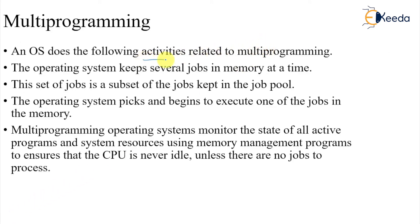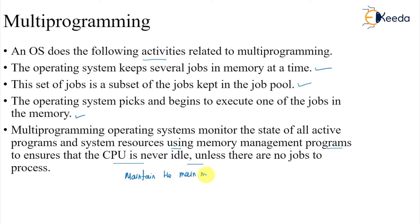There are four following activities — these are the properties. The OS keeps several jobs in memory at a time; the set of jobs is a subset of the job pool. The OS picks and begins to execute one job. The multi-programming system monitors the state of all active programs and system resources using memory management programs to ensure the CPU never remains idle. Also, we have to manage and maintain the main memory. With multiple jobs present, memory management becomes the key issue.